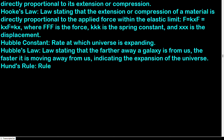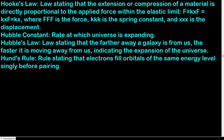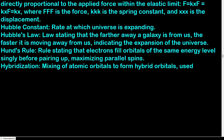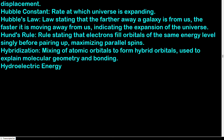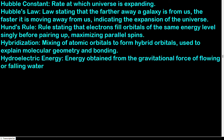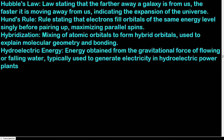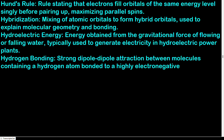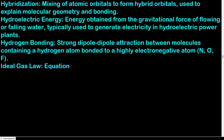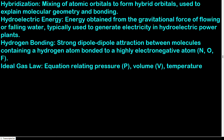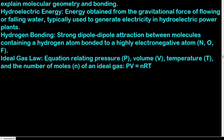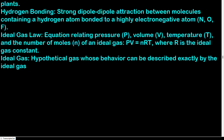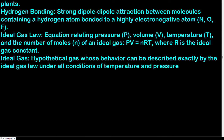Hund's rule: electrons fill orbitals of the same energy level singly before pairing up, maximizing parallel spins. Hybridization: mixing of atomic orbitals to form hybrid orbitals, used to explain molecular geometry and bonding. Hydroelectric energy: energy obtained from the gravitational force of flowing or falling water, used to generate electricity. Hydrogen bonding: strong dipole-dipole attraction between molecules containing a hydrogen atom bonded to a highly electronegative atom (N, O, or F). Ideal gas law: PV = nRT, relating pressure, volume, temperature, and the number of moles of an ideal gas.